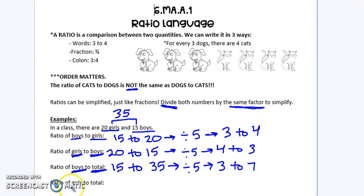And the last one, the ratio of girls to total. There are 20 girls. Again, the total is 35 total children. We need to simplify by dividing both by 5. So I get 4 girls for every 7 children.